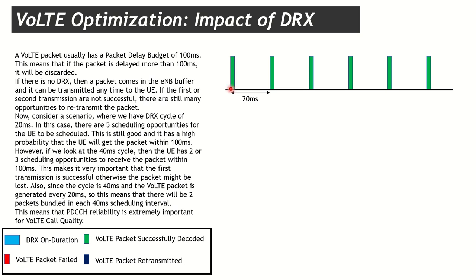the UE is awake all the time but it's only getting data in one millisecond intervals. In a 100 millisecond duration it only caught data in six milliseconds. Out of 100 milliseconds the UE was awake for only six milliseconds — it could still get all the data. We could save a lot of battery life if for the rest of the time the UE just goes to sleep mode. This is where the DRX concept comes into play.